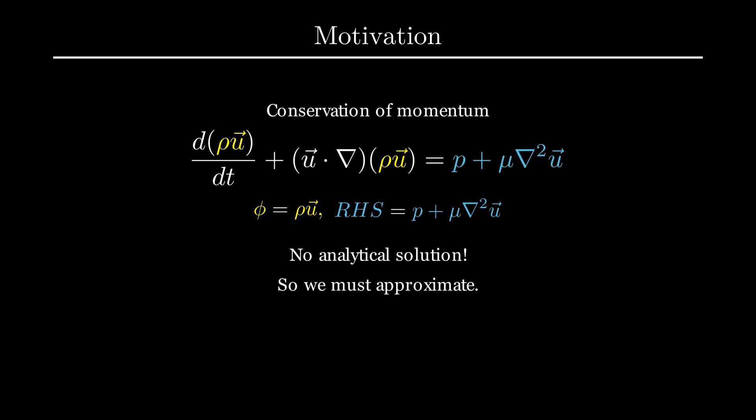Instead of finding phi at every possible time, of which there are infinitely many, we just find phi at finitely many times t0, t1, t2, and so on. We call the corresponding values phi0, phi1, phi2, and so on. This is called the finite difference method, from which the finite volume method is derived. The name might be intimidating, but it's actually a fairly simple concept.